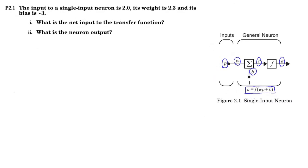So let's look at the question. In this question P is given as input. W is given. Bias is also given. And we are asked to find N as the input to the transfer function.